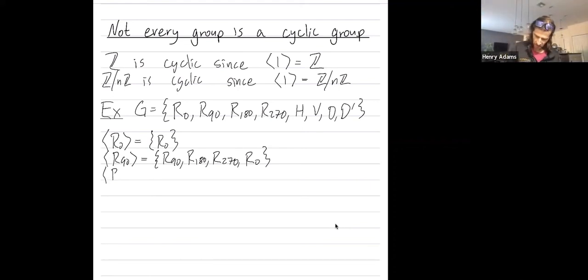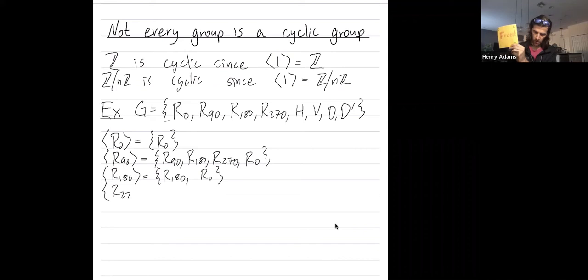When I rotate by 180 degrees, I just get the rotation by 180 degrees and then I get the identity back again. And when I rotate by 270 degrees, I get all of the rotations, but nothing else.